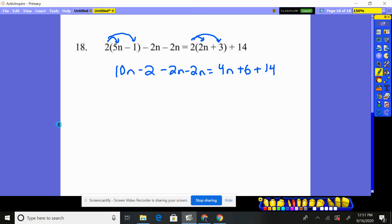Now, we need to combine like terms before we start moving anybody. 10 n minus two n is eight n, minus another two n is six n. Take away the number two because we still have that two right there. Four n is by itself, and six and 14 together is 20.